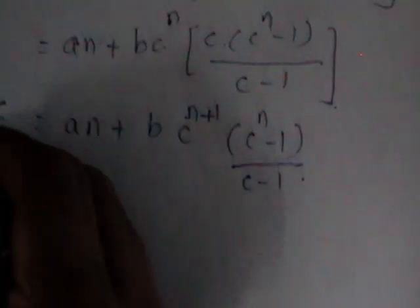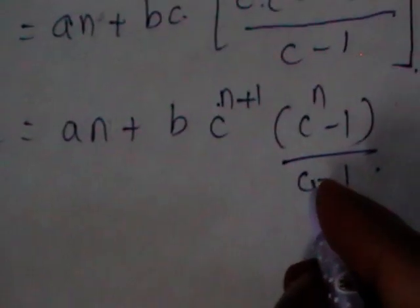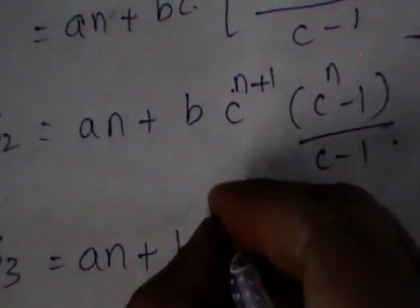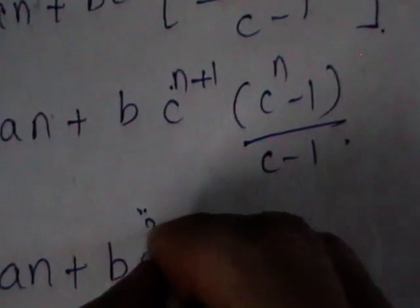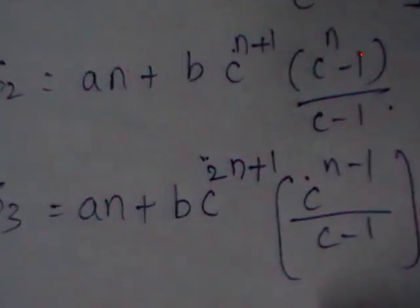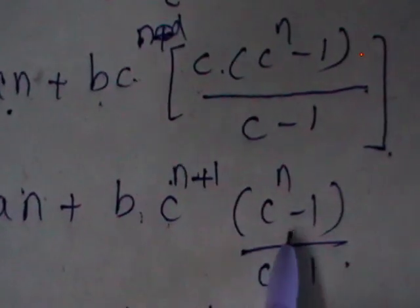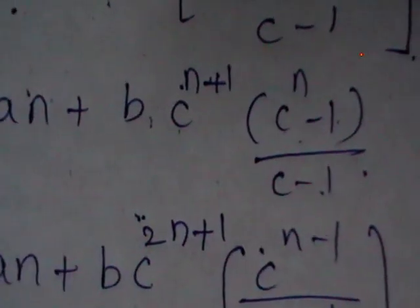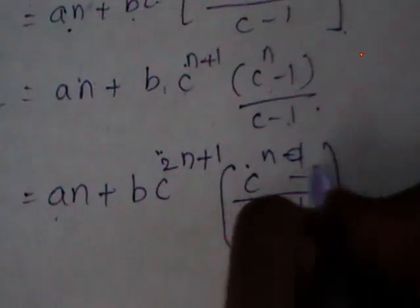By symmetry, S3 = Σ(t=2n+1 to 3n) Yt, which gives S3 = An + BC^(2n+1)(C^n - 1)/(C - 1). The pattern is the same: An is common in all three sums, and only the power of C in the B term changes as we move from one part to the next.